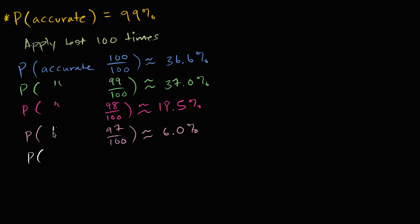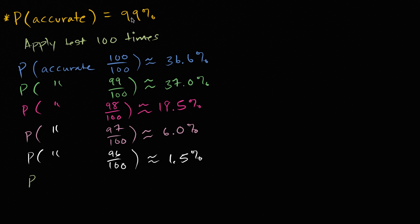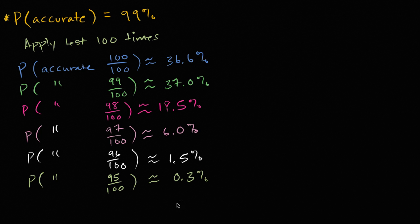The probability that it is accurate 96 out of 100 times is approximately 1.5%. And the probability that 95 out of the 100 are accurate is approximately 0.3%. You can see what's happening to the probabilities as we have fewer and fewer accurate results — it becomes less and less probable.